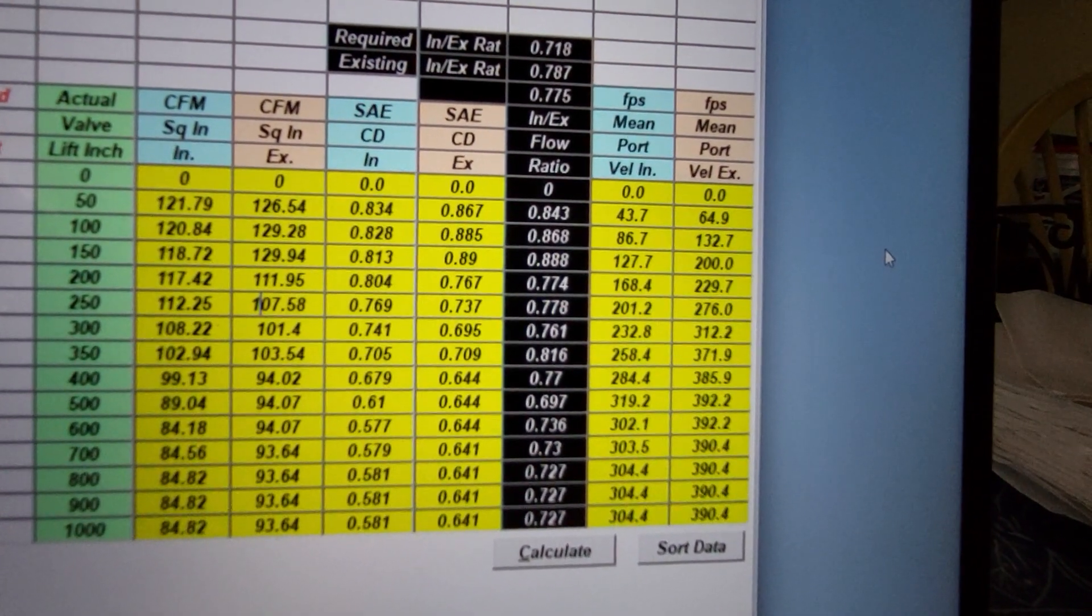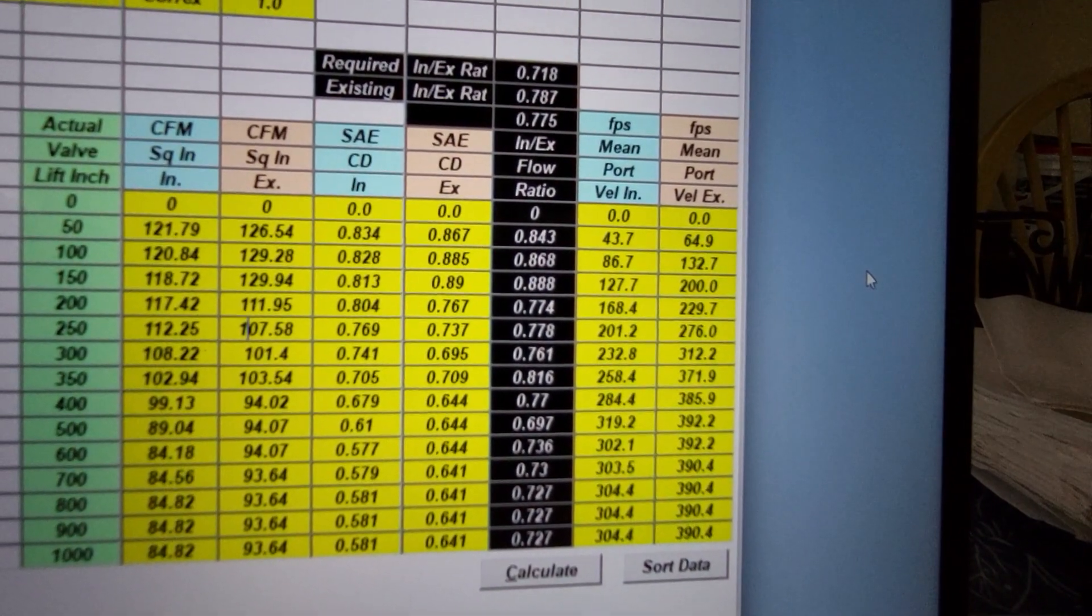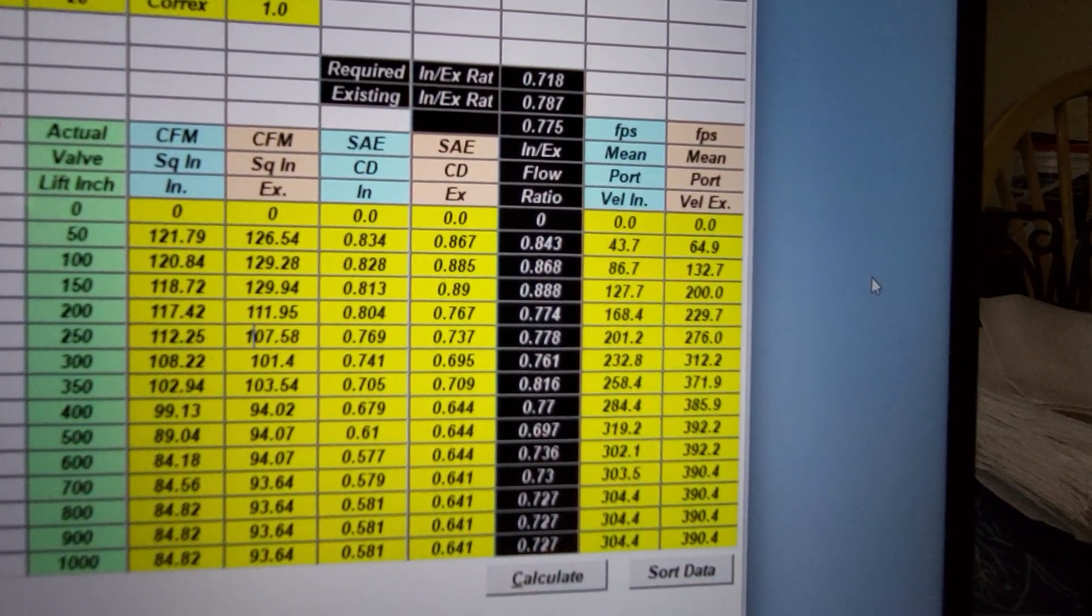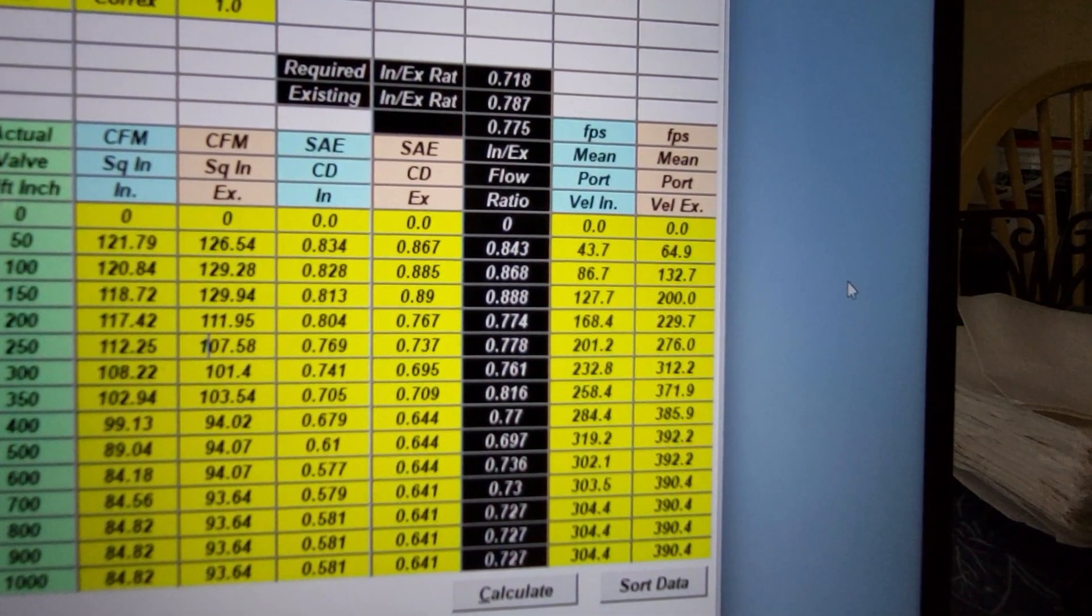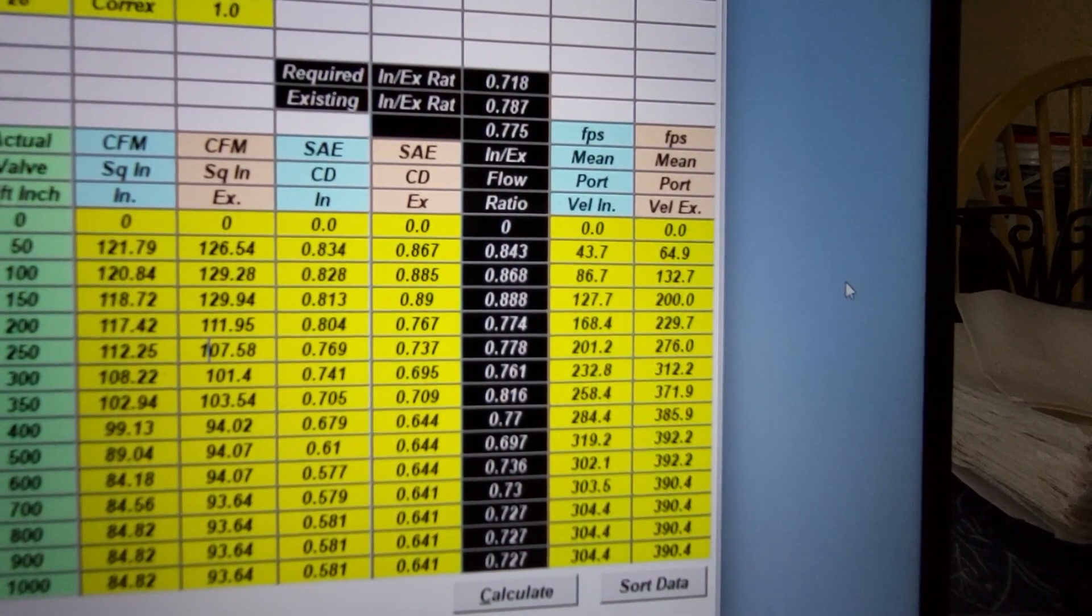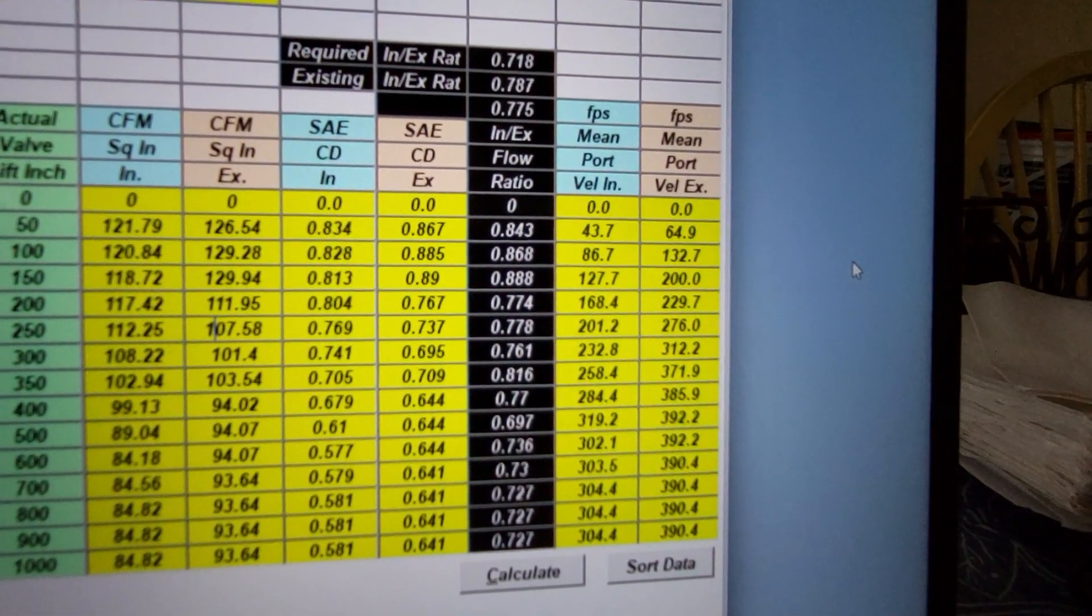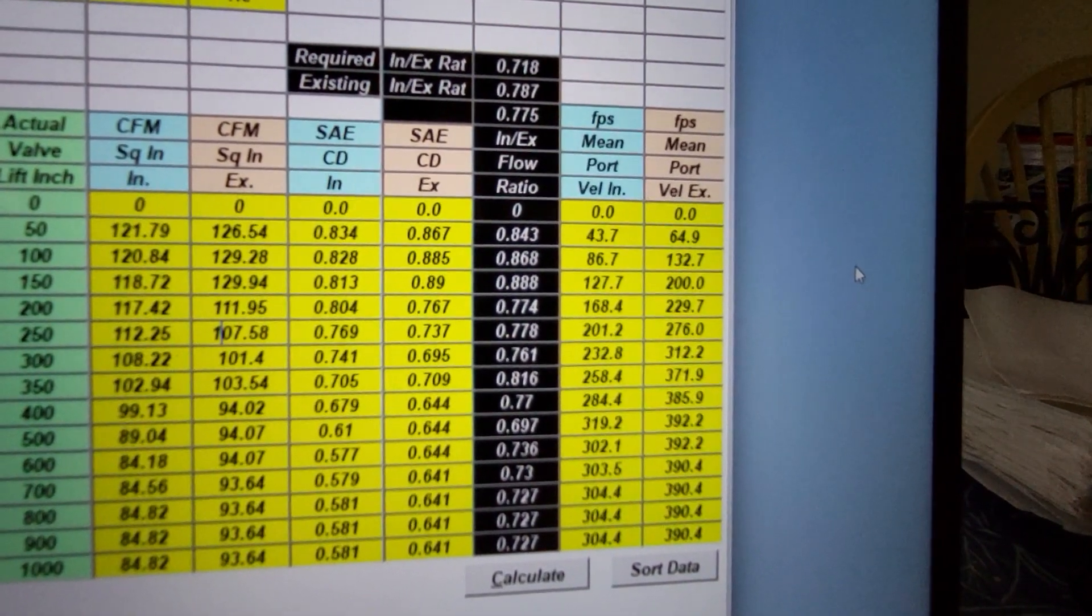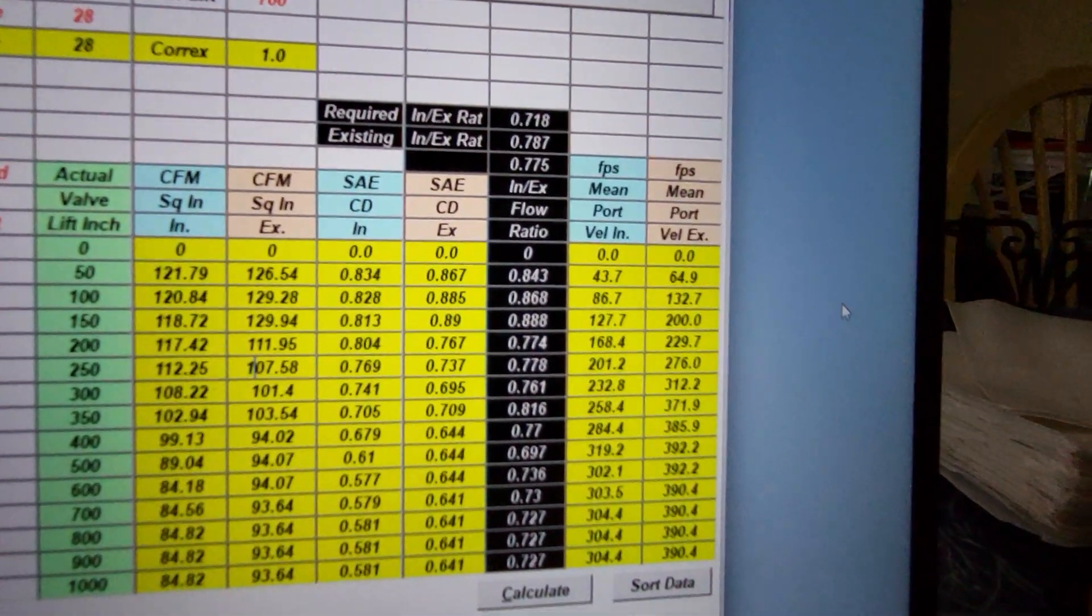Now take a look at our exhaust port speeds. Ouch, excessively fast, right? Well maybe. Do I have any doubt that I could make that port bigger and get more flow out of it? None. Would I rather have a small fast port? Yes, especially on a street application. It's going to be hot street application but still street application.